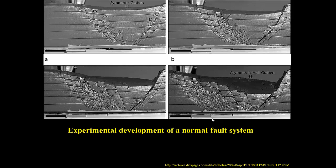Experimental work tries to understand how normal fault systems evolve in the laboratory, putting clay over an extending sheet as Cloos did. Pulling from one side, a graben starts fairly symmetric but as extension continues we develop an asymmetric half-graben. On one side the main fault stays localized and accommodates almost all the deformation along a single fault, while on the other side right-dipping faults distribute the same amount of extension across multiple faults.